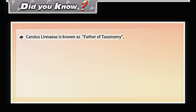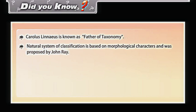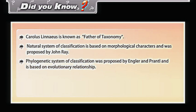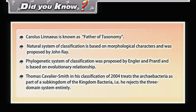Carolus Linnaeus is known as the father of taxonomy. The natural system of classification is based on morphological characters and was proposed by John Ray. The phylogenetic system of classification was proposed by Engler and Prantl and is based on evolutionary relationships. Thomas Cavalier-Smith in his classification of 2004 treats the Archaeobacteria as part of a sub-kingdom of the kingdom Bacteria, rejecting the three-domain system entirely.